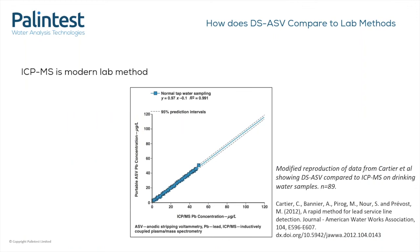The modern lab method, as I've just mentioned, is ICP-MS, or inductively coupled plasma mass spectrometry, which I used during my PhD — it's complex to both perform the test and often to interpret the results as well. What we can see here is a comparison of the Chemio ASV method with the ICP-MS method. This graph shows that there is very good agreement between the two results, showing that you can achieve comparable results to a lab using the Chemio Heavy Metals technology for analysing lead.